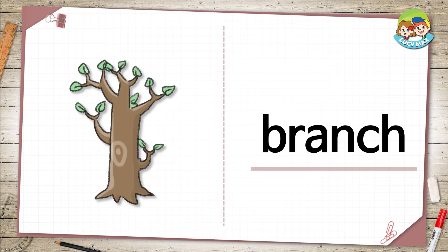Branch. This is a tree. The large part of it is the trunk. The trunk is thick. The small parts are branches. The branches are from the trunk. Leaves grow on the branches.